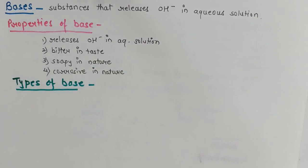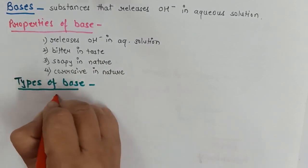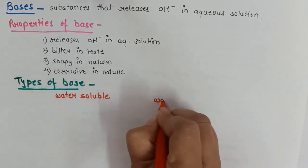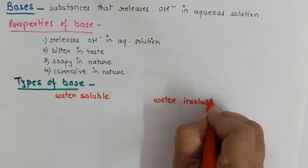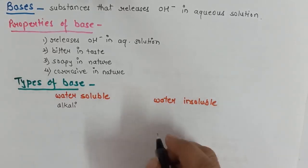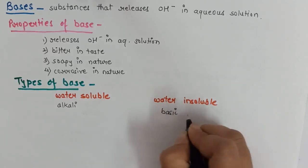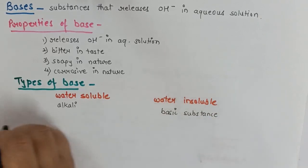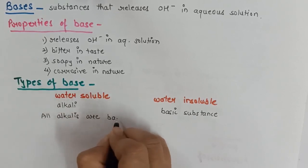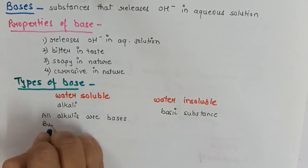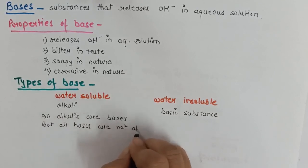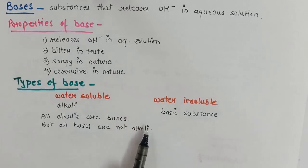Like we saw types of acids, there are two types of bases as well: one is water-soluble and another is water-insoluble. Water-soluble bases are called alkalies, whereas water-insoluble bases we call as basic substances only. Remember: all alkalies are bases, but all bases are not alkalies, because all bases are not water-soluble, and therefore all bases are not alkalies.